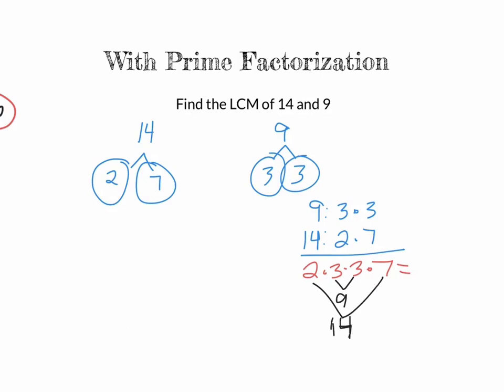Since there are no common prime numbers in their factorizations, we bring everything down and multiply: 3 × 3 = 9, and 2 × 7 = 14, then 14 × 9 = 126. That matches what we found using the list method. You pair up prime factorizations if you can — in this case we couldn't, so we brought everything down.